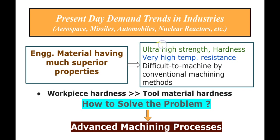The answer is that engineering materials which are in demand should have much superior properties than commonly used metals. They should have ultra-high strength and hardness, and very high temperature resistance. For example, turbine blades operate at 1100 to 1200 degrees Celsius, and at that temperature they should retain their shape, size, and other properties while in use.